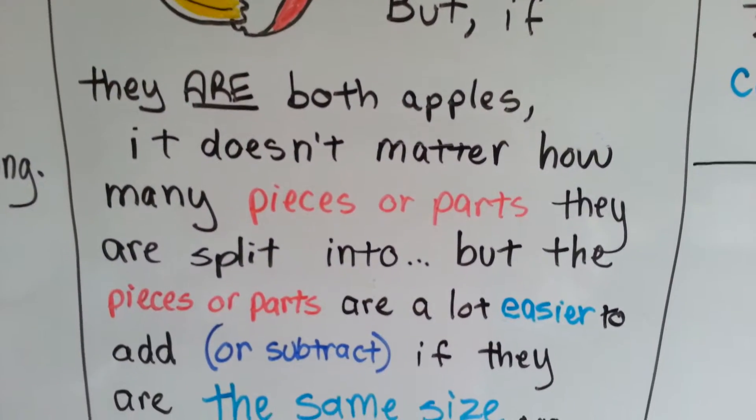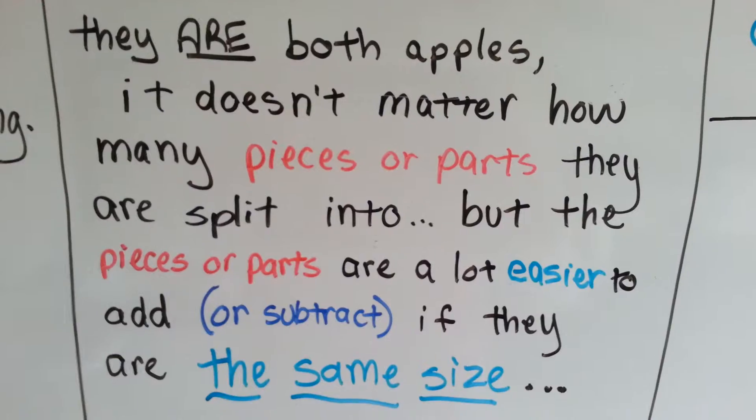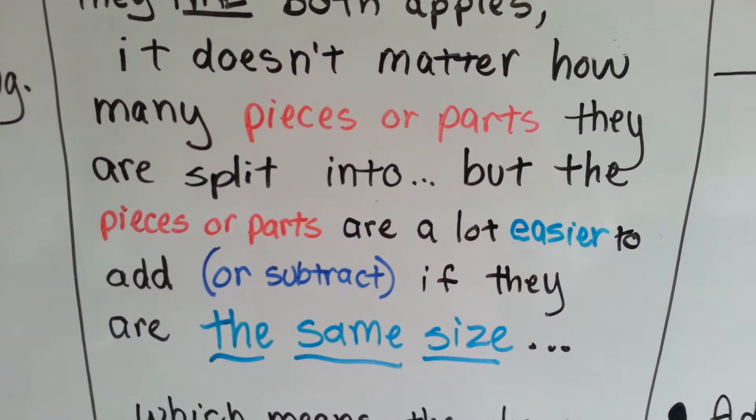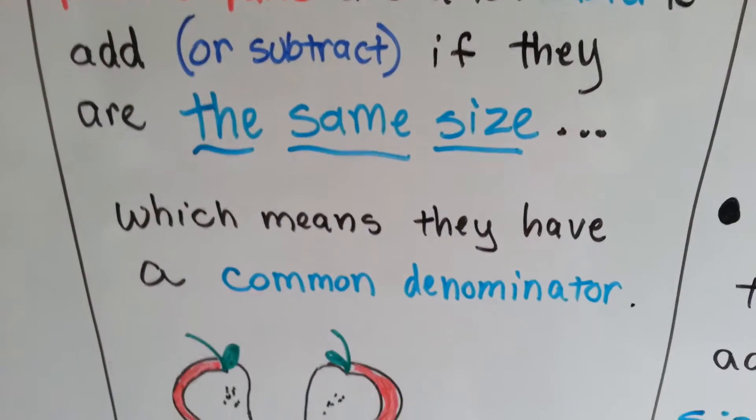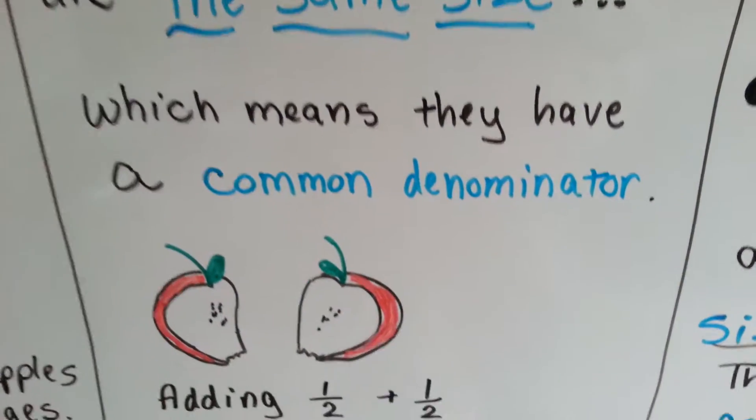The pieces or parts are a lot easier to add or subtract if they are the same size. They are cut into the same size, which means they have a common denominator.